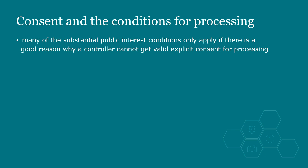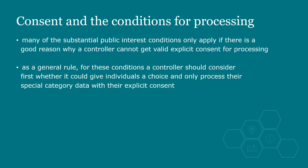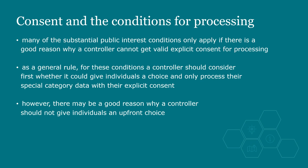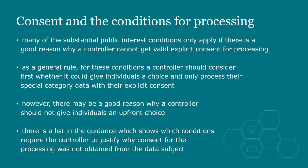Many of the substantial public interest conditions only apply if there is a good reason why a controller cannot get valid explicit consent for processing. As a general rule, a controller should consider first whether it could give individuals a choice and only process their special category data with their explicit consent. However, there may be a good reason not to give individuals an upfront choice — for example, the condition at paragraph 18 concerns safeguarding of children or individuals at risk, where asking for consent might prejudice the provision of the required protection, such as protecting an individual from physical, mental or emotional harm. The ICO guidance lists which conditions require the controller to justify why consent was not obtained from the data subject.